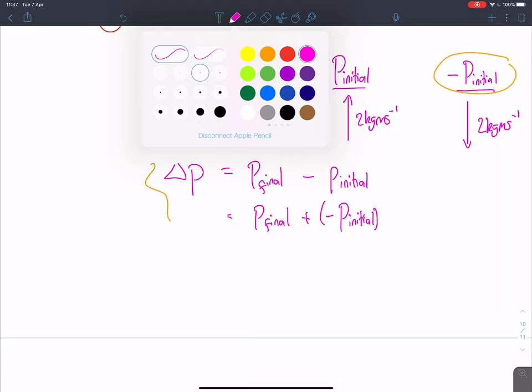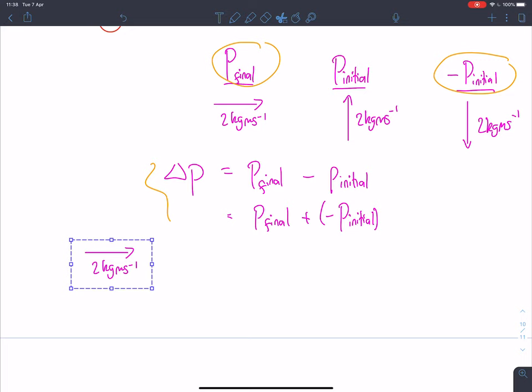We're going to add those two vectors together. I'm going to take this vector, move it down here, and add it, just like we showed before, to this one. We've got these two arrows, and we go from the start to the end. This red arrow is my change in momentum, my final momentum minus my initial momentum.